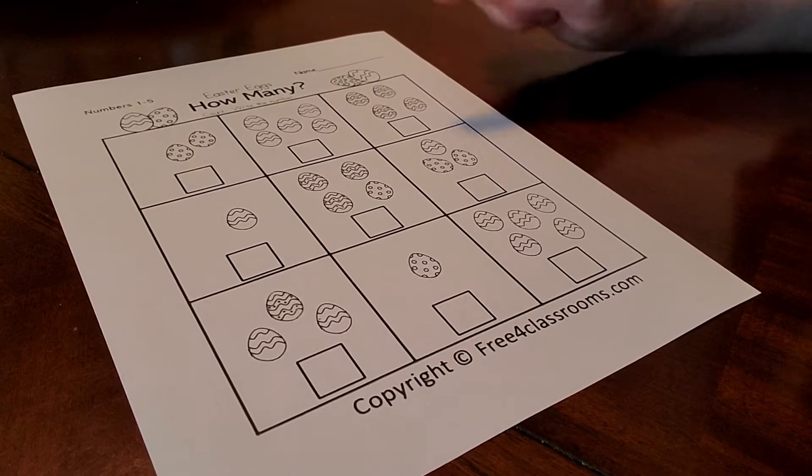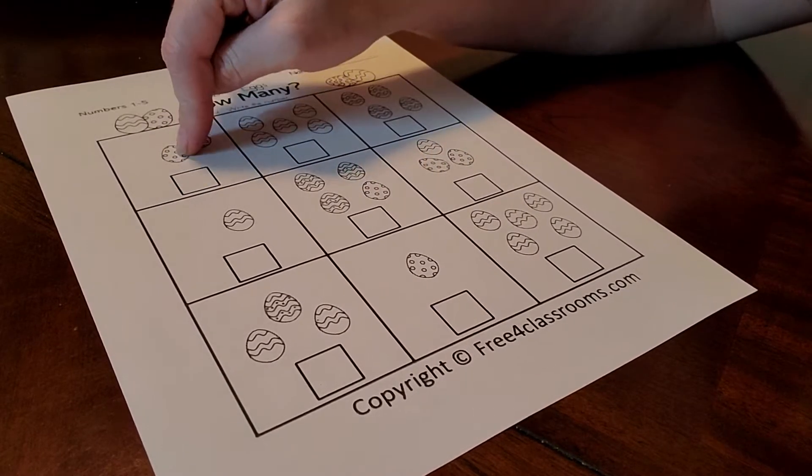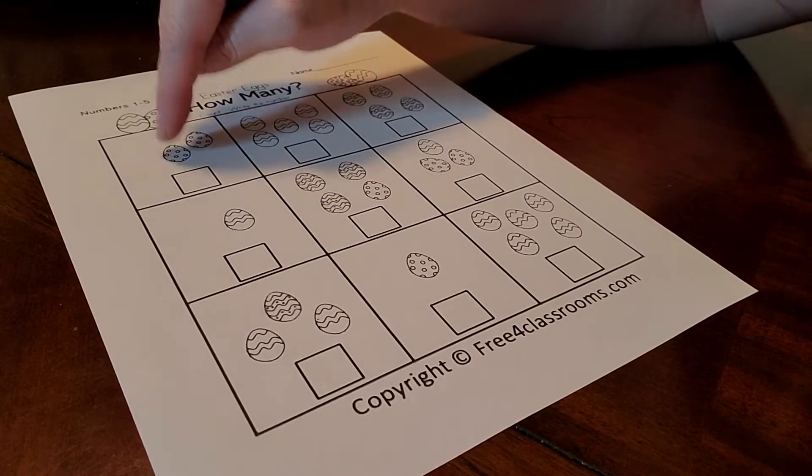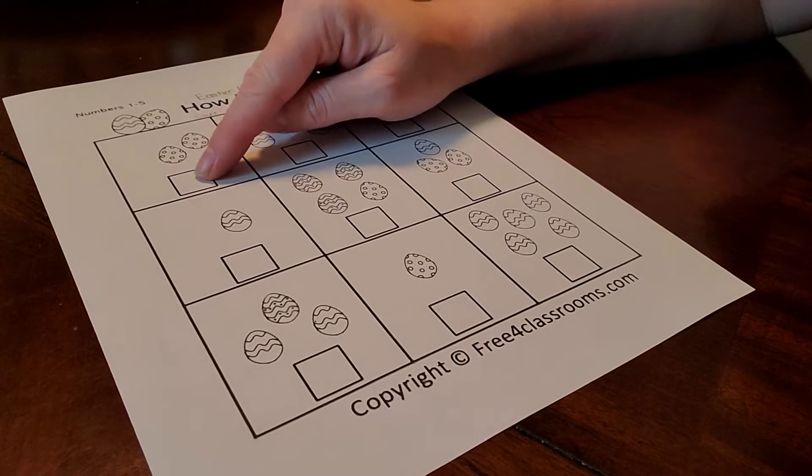This is the one-to-one correspondence, which means if I touch one object, I give it the name of one number. So one, two, and then on this worksheet, we're going to write the numbers.